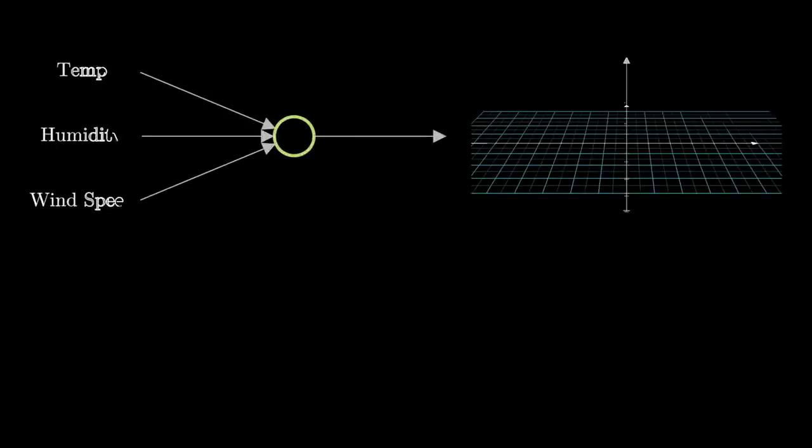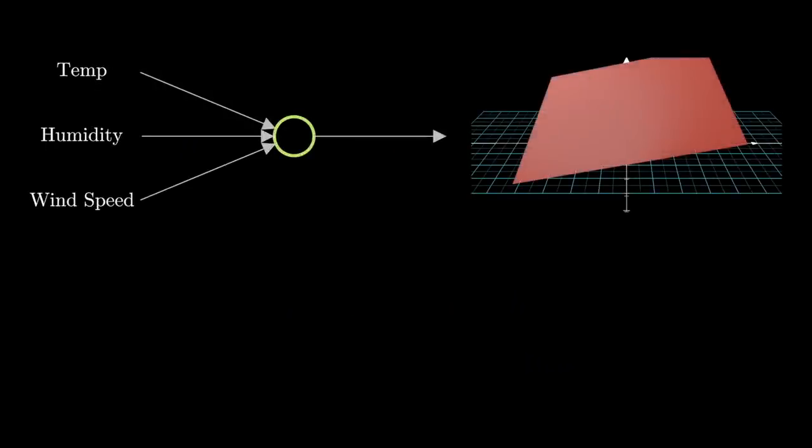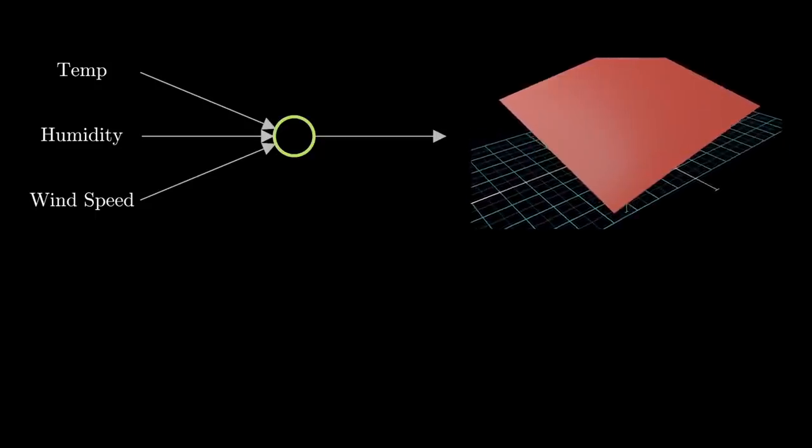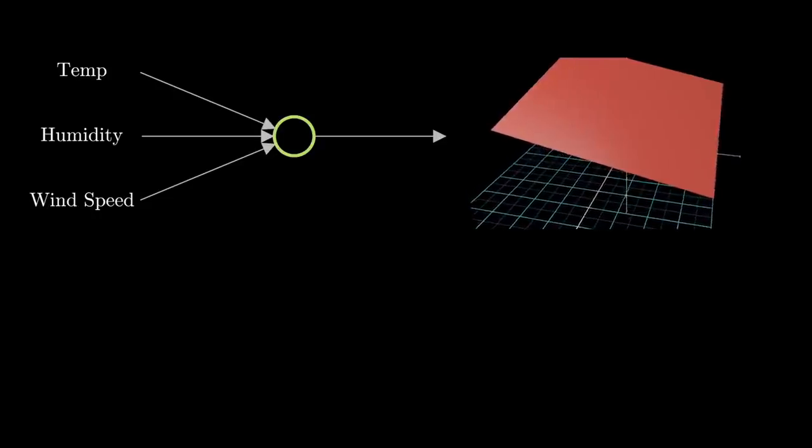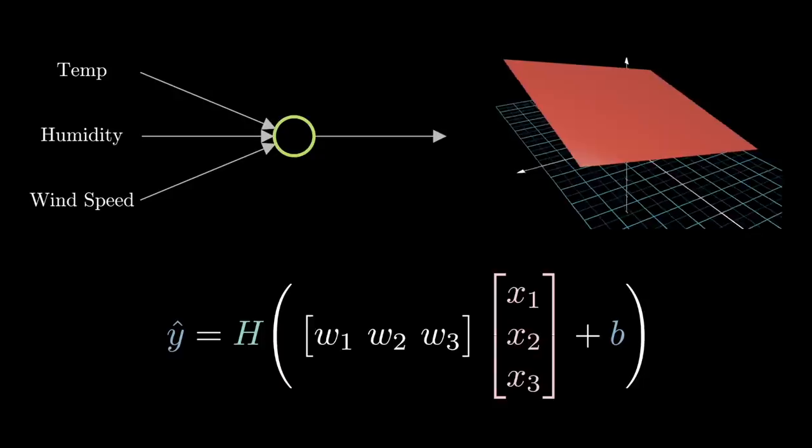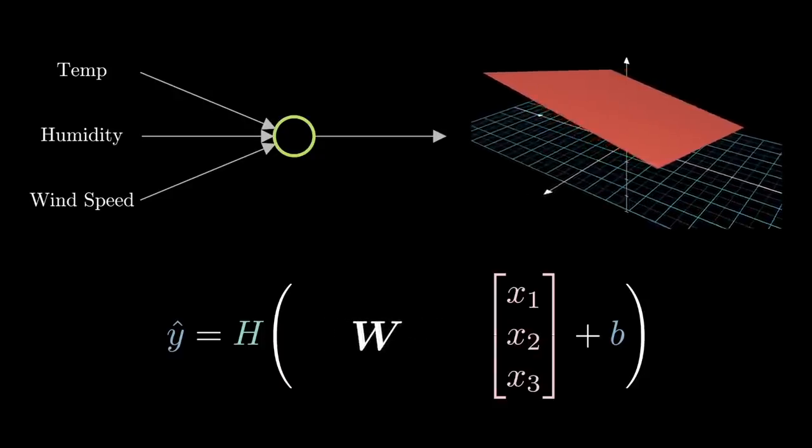The case for three dimensions is pretty similar. Let's say I wanted to look at wind speed too. Now we move our input space into three dimensions and the decision boundary can be represented by a plane or a hyperplane to generalize. The input matrix is now three by one and the formula for the output of the perceptron remains the same.